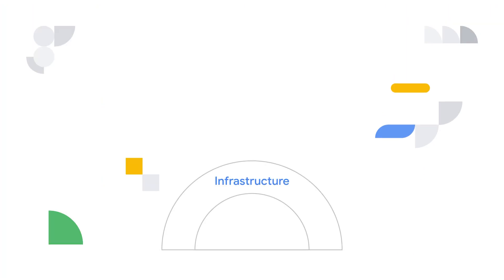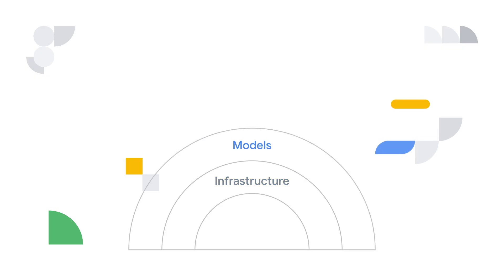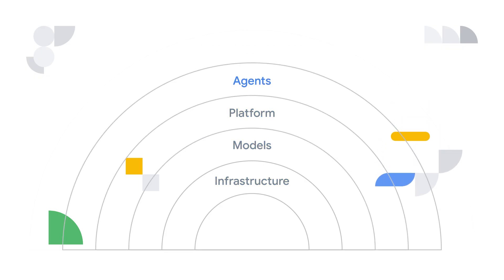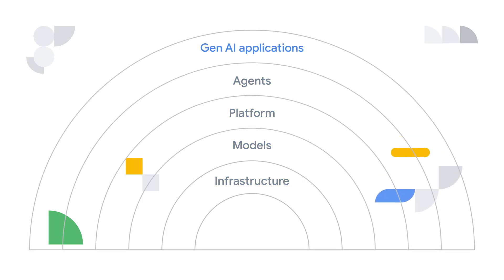We like to think about Gen AI as being composed of five layers. They are infrastructure, models, platform, agents, and Gen AI-powered applications.